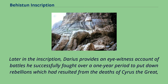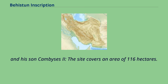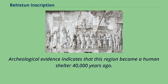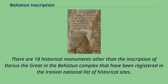Later in the inscription, Darius provides an eyewitness account of battles he successfully fought over a one-year period to put down rebellions which had resulted from the deaths of Cyrus the Great and his son Cambyses II. The site covers an area of 116 hectares, and archaeological evidence indicates that this region became a human shelter 40,000 years ago. There are 18 historical monuments other than the inscription of Darius the Great in the Behistun complex that have been registered in the Iranian National List of Historical Sites.